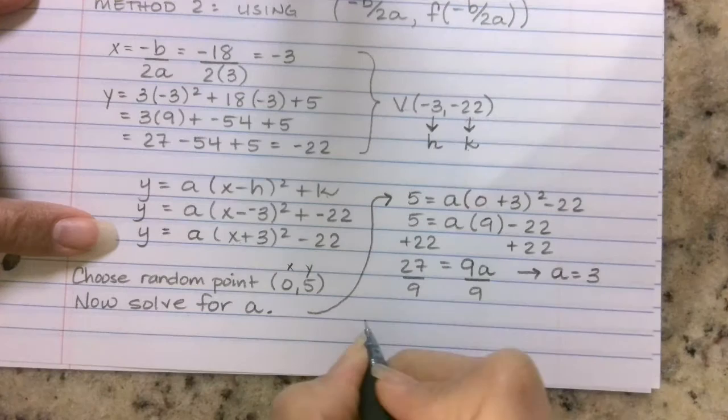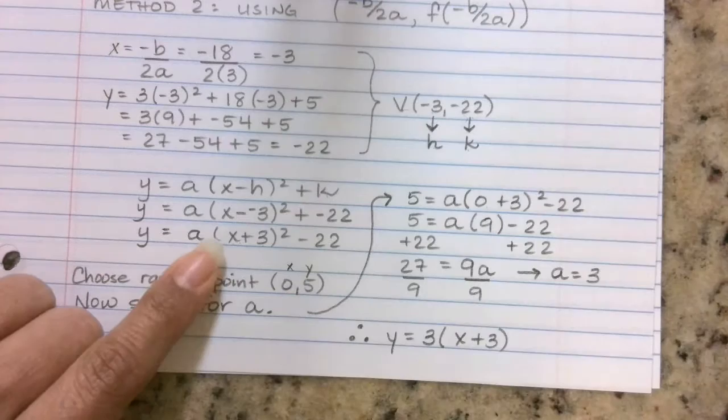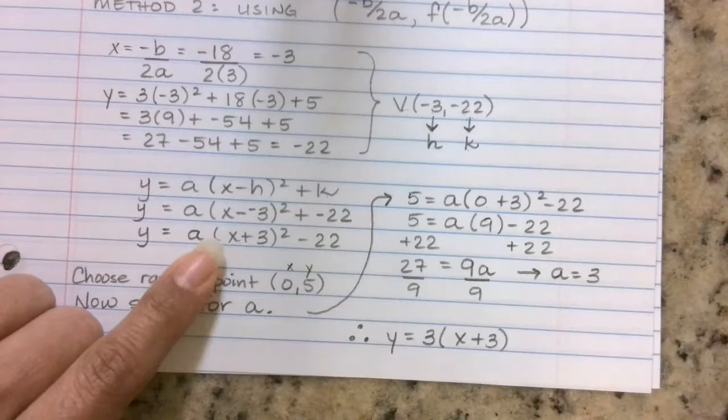So therefore, the vertex form of the equation we're looking for would be 3(x + 3)² - 22. So all I'm doing is substituting the a that I found. So that's the second way of finding the vertex form of a quadratic.